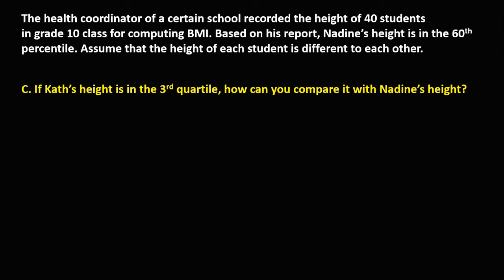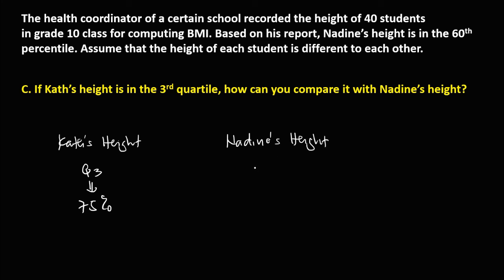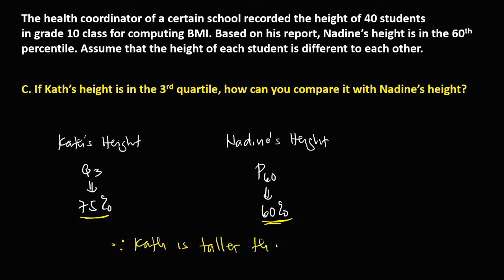For this next problem: if Kat's height is in the 3rd quartile, how can you compare it with Nadine's height? Since Kat's height is in the 3rd quartile, or Quartile 3, which is equal to the 75th percentile, and Nadine's height is at the 68th percentile — therefore, Kat is taller than Nadine.